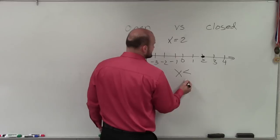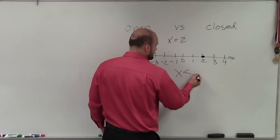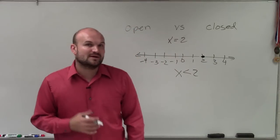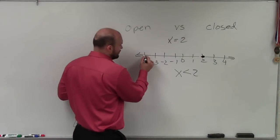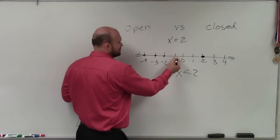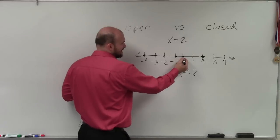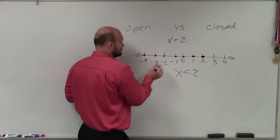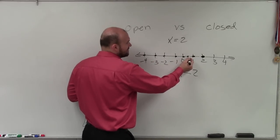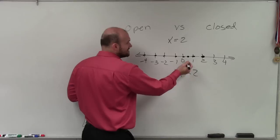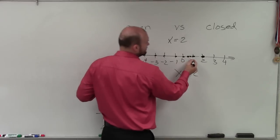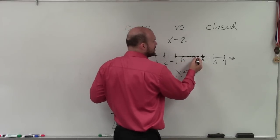Now I want you to graph x is less than 2. That means plot all the points that are less than 2. Is negative 4 less than 2? Yes. Negative 3? Yes. Negative 2? Yes. Negative 1? Yes. 0? Yes. But also, what about 0.5 or one half? Yes. What about two thirds? Yes. What about 1.5? Yes. What about 1.1? Yes.